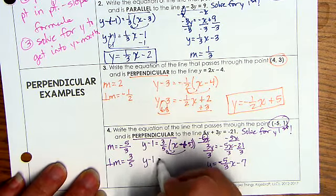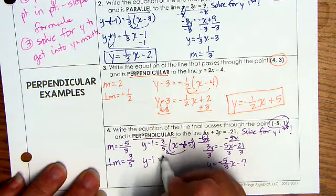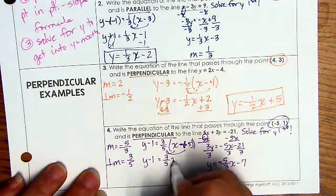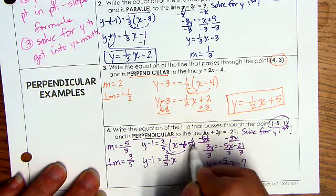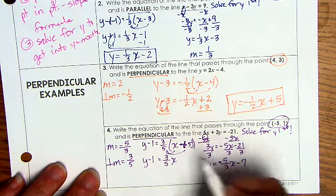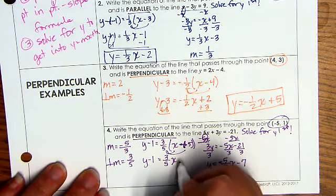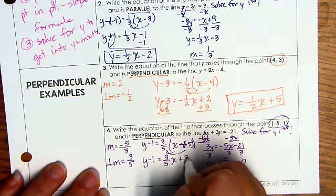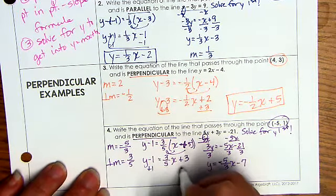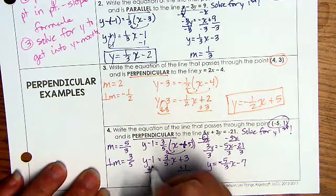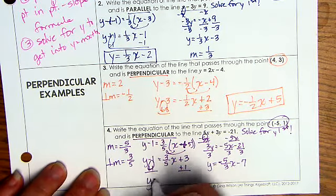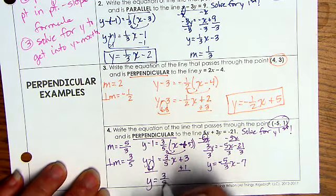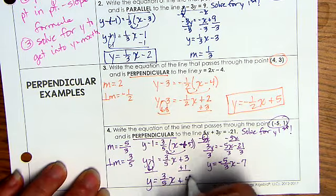Y minus 1 equals 3 fifths x. The 5s are going to be nicely canceling. This is so nice when they work out that way. So this becomes negative 3 fifths x plus 3. Add 1 to both sides.